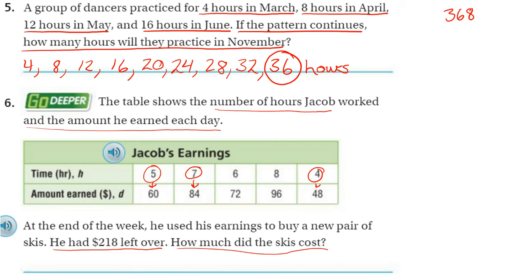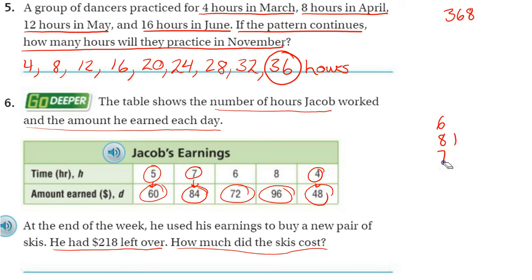We just need to total up how much he made first. We need to find out how much he made for the week. What is his hourly rate? That would help us solve this problem faster. It looks like from this problem he makes $12 an hour. So his earnings equation is going to be D equals 12 times H — they wanted us to use D for the amount of money he made.